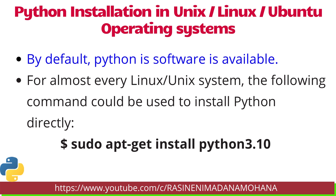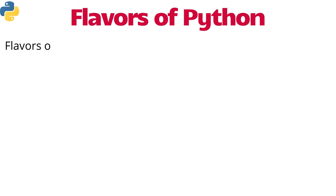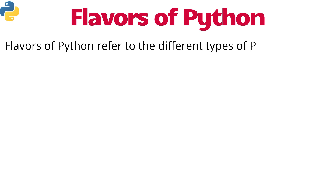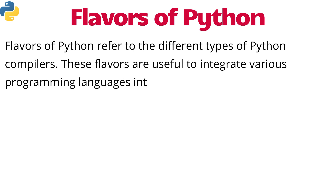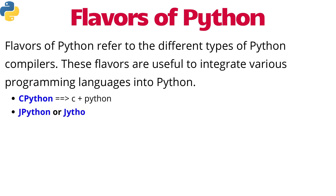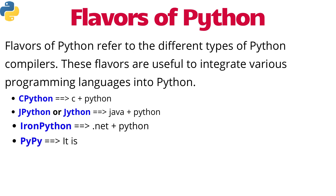There are some flavors of Python. Flavors of Python refer to the different types of Python compilers. These flavors are useful to integrate various programming languages into Python. Some of the flavors are: CPython — which is a combination of C plus Python; Jython, also called Jaton — which is a Java plus Python combination; and IronPython — which is a combination of .NET plus Python.